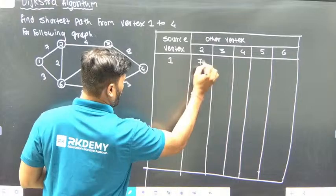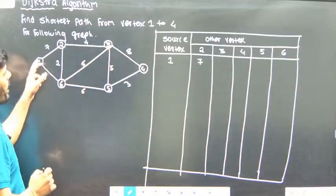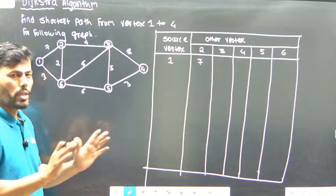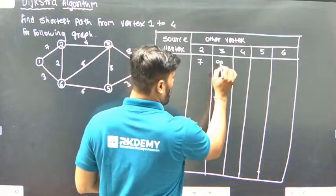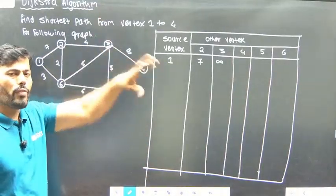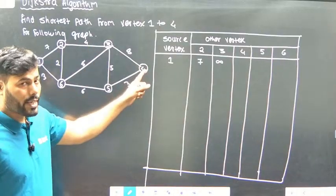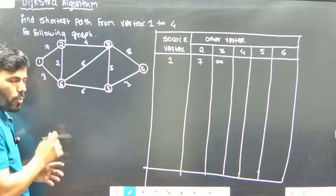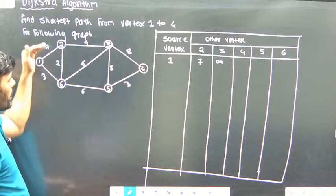From 1 to 3, if not directly connected, we assume it has infinite value. The values are 7, 4, 11, and some infinite value. Vertex 1 and 2 are directly connected. Vertex 1 and 4 are not directly connected, but indirectly connected.